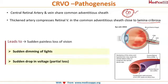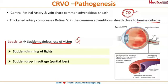This leads to the patient complaining of a sudden painless loss of vision. CRVO is another differential diagnosis alongside retinal detachment that causes sudden painless loss of vision — kindly remember this, it can be a question. The patient describes it as a sudden dimming of lights: 'Doctor, I was sitting in my room and suddenly the lights got dimmed and I am unable to see anything since then.' Or he can describe a drop in voltage, indicating partial loss of vision.